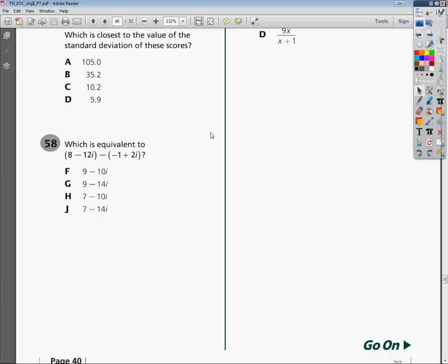The question says, which is equivalent to the quantity 8 minus 12i minus the quantity negative 1 plus 2i? It might freak you out to see those i's there, because they're like staring back at you, there's two of them.